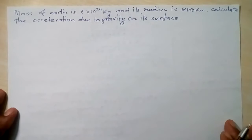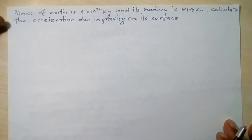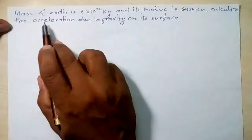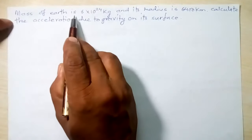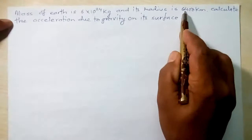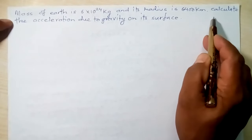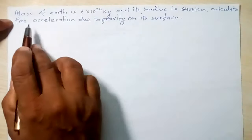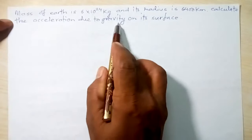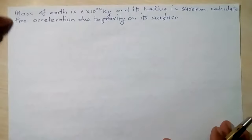I'm going to solve a numerical problem related to acceleration due to gravity. The mass of Earth is given as 6×10²⁴ kg and its radius is also given as 6400 kilometers. The question asks to calculate the acceleration due to gravity on the surface.